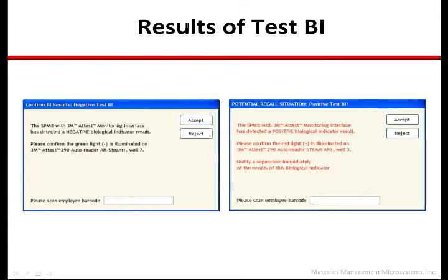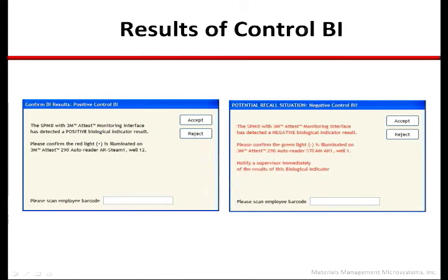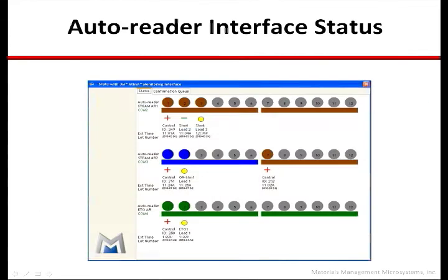These are the two screens for advising the technician to confirm the outcome of the test BI. The first is the negative result, asking for the technician to visually confirm the result that the auto-reader and interface have provided. The second is the positive result, where the same confirmation is required and where the recall sequence would then follow. These are the two screens for advising the technician to confirm the outcome of the control BI the auto-reader has incubated. The first screenshot is an example of a positive control BI asking for the technician to visually confirm the result. The second screenshot is an example of a negative control BI result where the same confirmation is required and a supervisor should be consulted to determine next steps.